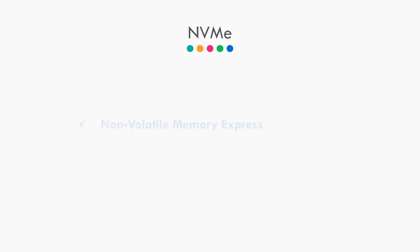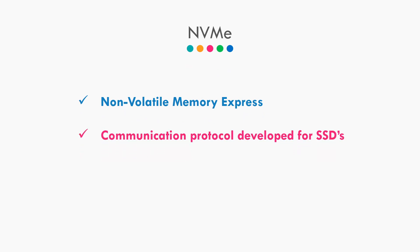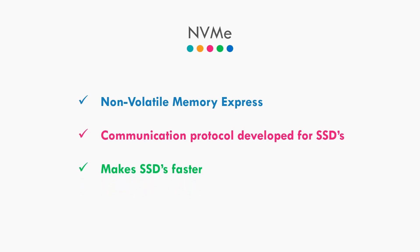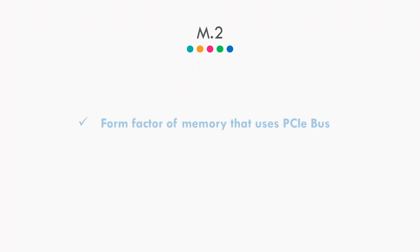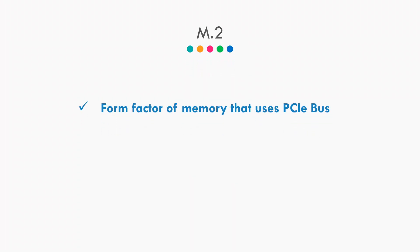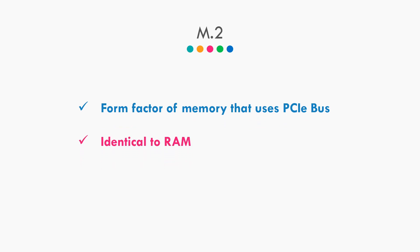Now let's move into NVMe. NVMe stands for Non-Volatile Memory Express, and it is just the communication protocol which was developed for SSDs. Basically, it's just the software for SSDs, and without it your SSD will not work as fast as it should. Now, M.2 is just the form factor of the memory that uses PCIe bus. It is quite similar to what RAM looks like.